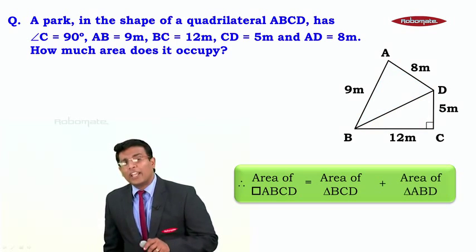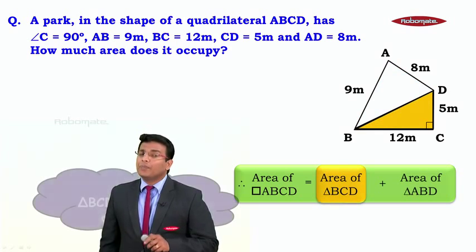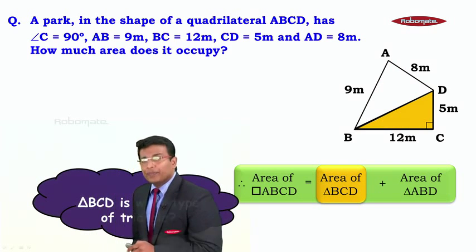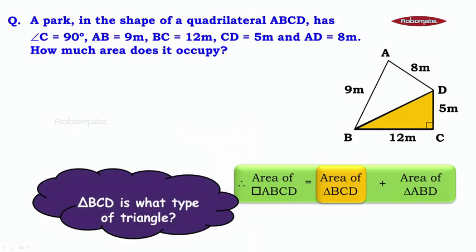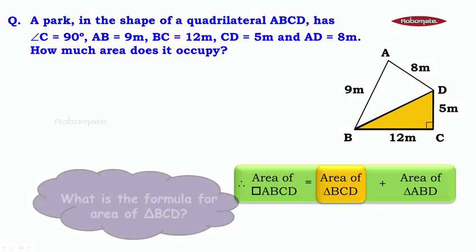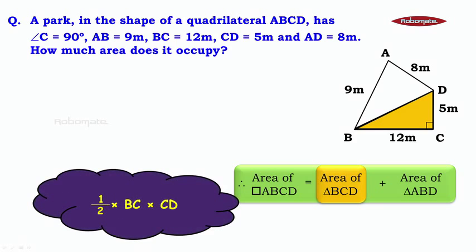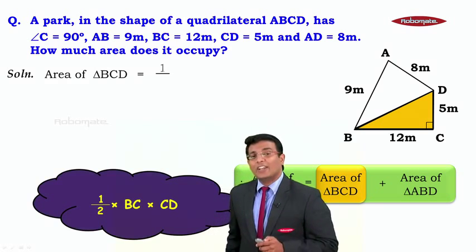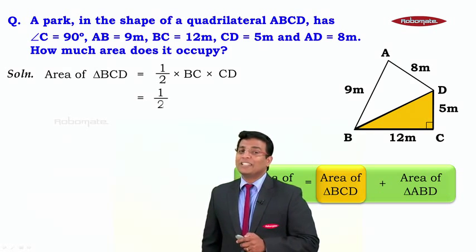Let's focus on one. Now, when we talk about area of triangle BCD, observe this triangle and tell me triangle BCD is what type of a triangle? It's a right angle triangle. Now, if it is a right angle triangle, what is the formula for area of that? It is half into base into height. So it is half into BC into CD. We write half into BC into CD.